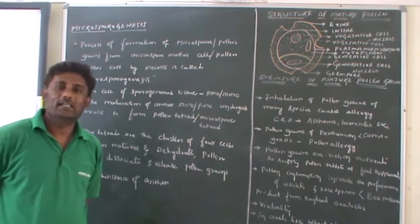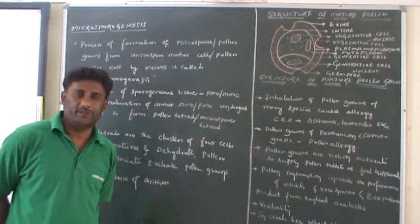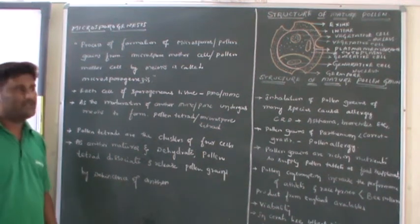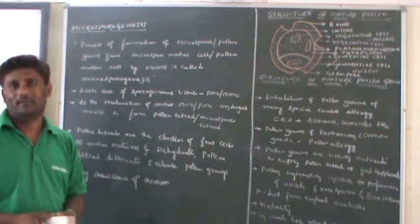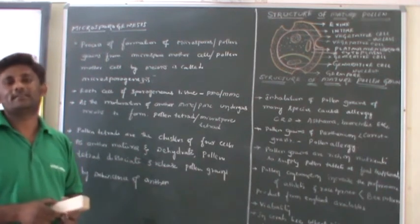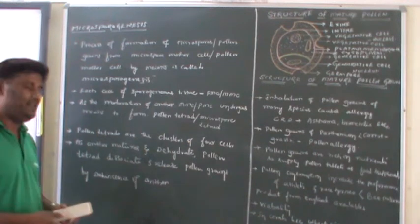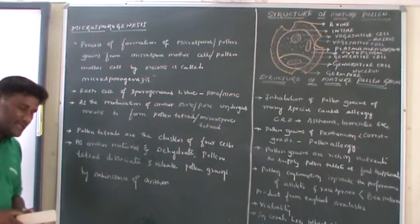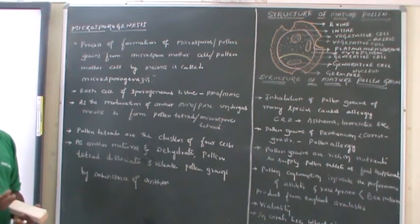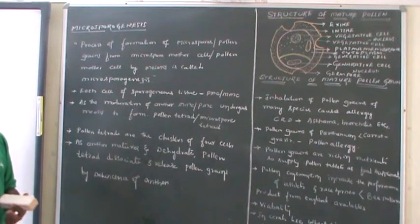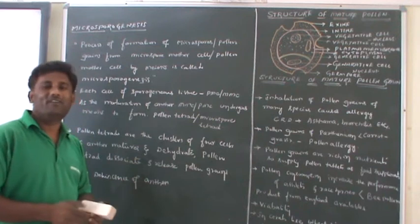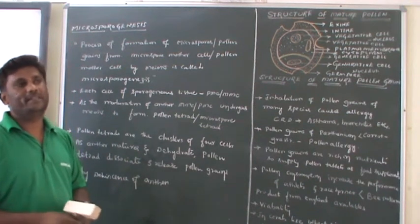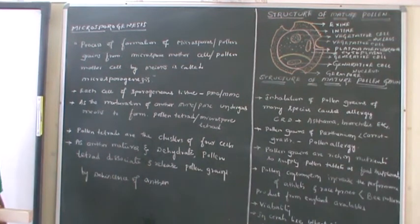Inside the anther there will be presence of tissue known as the sporogenous tissue, and each cell present in this sporogenous tissue will act as a pollen mother cell or microspore mother cell. Every cell present in the sporogenous tissue acts as a pollen mother cell or microspore mother cell, and these microspore mother cells undergo meiosis. As a result of meiosis, four cells are produced. That is why at the end there is formation of a cluster of four pollen grains, known as the pollen tetrad or microspore tetrad.